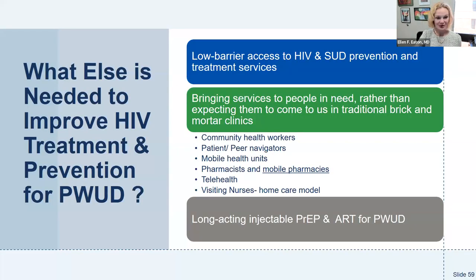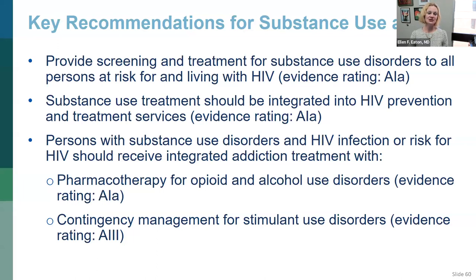A few more slides on social determinants of health. Treating this population requires meeting the patient where they are: low-barrier access, walk-in clinics, street clinics, pop-up clinics in parks where unhoused people live, partnering with peers and pharmacists, mobile pharmacies, and telehealth. Key recommendations: please provide screening and treatment for all patients with substance use disorders. Consider integrating this treatment into your HIV practice — you don't need a psychiatrist or counselor to do this. Patients with substance use disorder and HIV should receive integrated pharmacotherapy for opioid and alcohol use disorder, tobacco use disorder, and when possible, contingency management for stimulant use disorder.